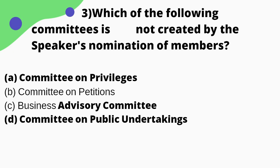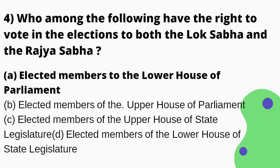Which of the following committee is NOT created by the Speaker's nomination of members? Option A — Committee on Privileges; option B — Committee on Petitions; option C — Business Advisory Committee; option D — Committee on Public Undertakings. The right answer is option D — Committee on Public Undertakings. Let's move on to the next question.